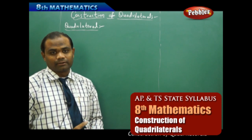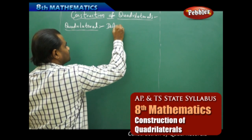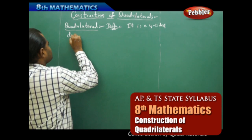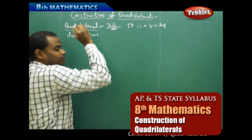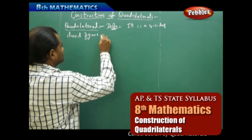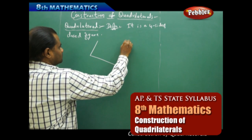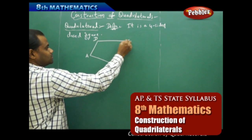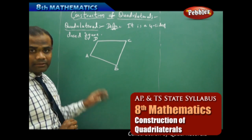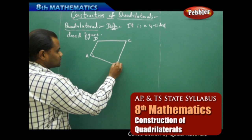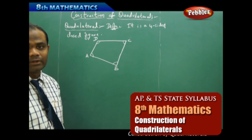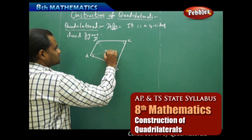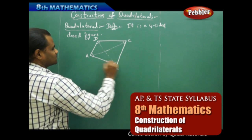The definition of a quadrilateral states that it is a four-sided closed figure. I usually denote the vertices as A, B, C, and D. There are four sides which are closed, four angles at each corner of the figure, and two diagonal lines which join the opposite vertices and are called the diagonals.